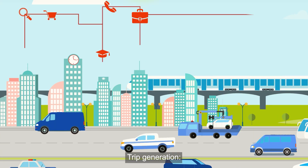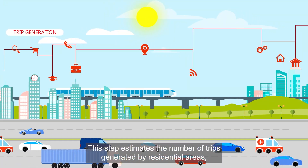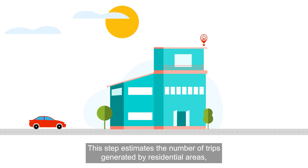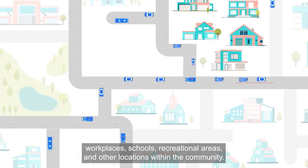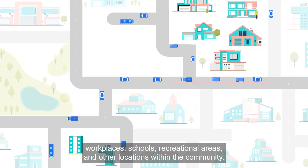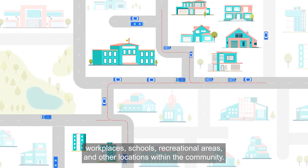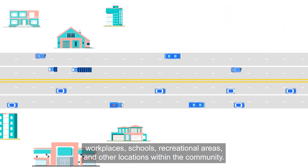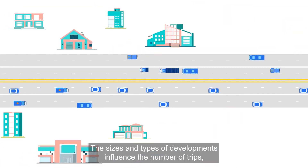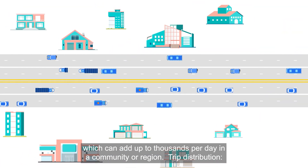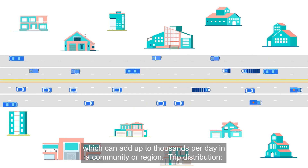Trip generation: this step estimates the number of trips generated by residential areas, workplaces, schools, recreational areas, and other locations within the community. The sizes and types of developments influence the number of trips, which can add up to thousands per day in a community or region.